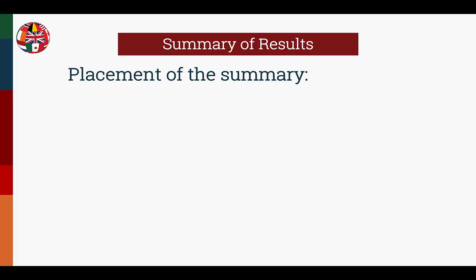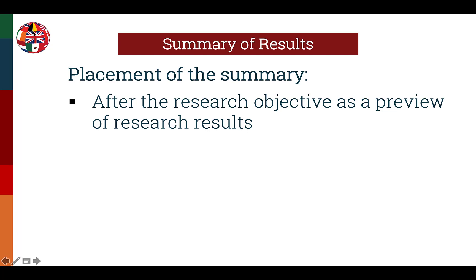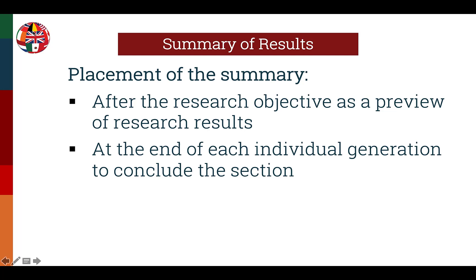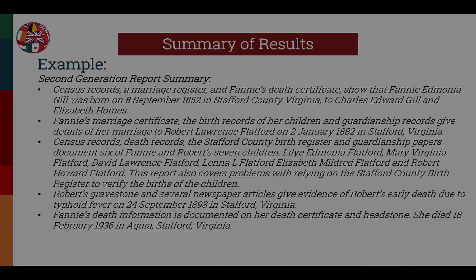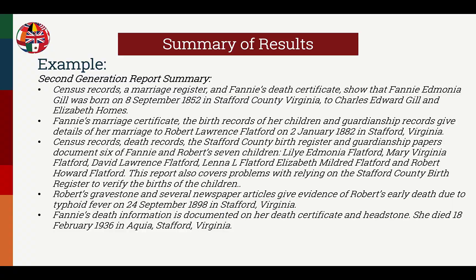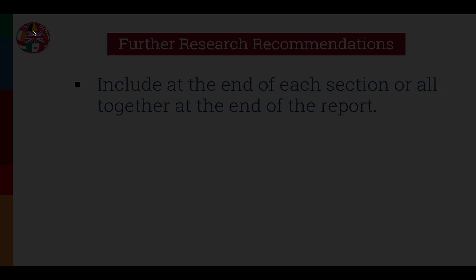When it comes to the placement of the summary of results, it can be placed according to individual preference. It can be placed after the research objective as a preview of research results, at the end of each individual generation to conclude that section, or at the end of the report as a discussion that includes all four generations. Here is an example of a summary placed after the end of the second generation section of a report — please pause the video if you'd like to read it in more detail.